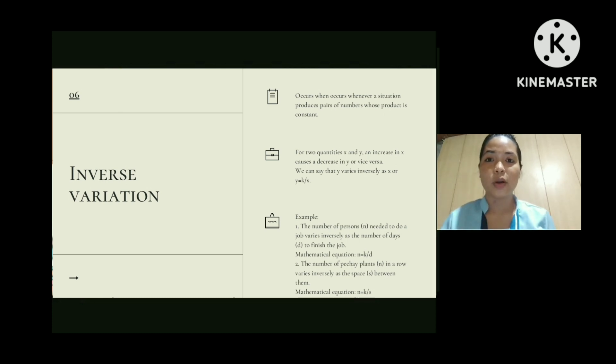We have here example. This example is translating into mathematical equations. We are going to translate the statement into mathematical equations. Number one: The number of persons denoted as n needed to do a job varies inversely as the number of days denoted as d to finish the job. So the mathematical equation for this is n equals k over d. Did you get it?